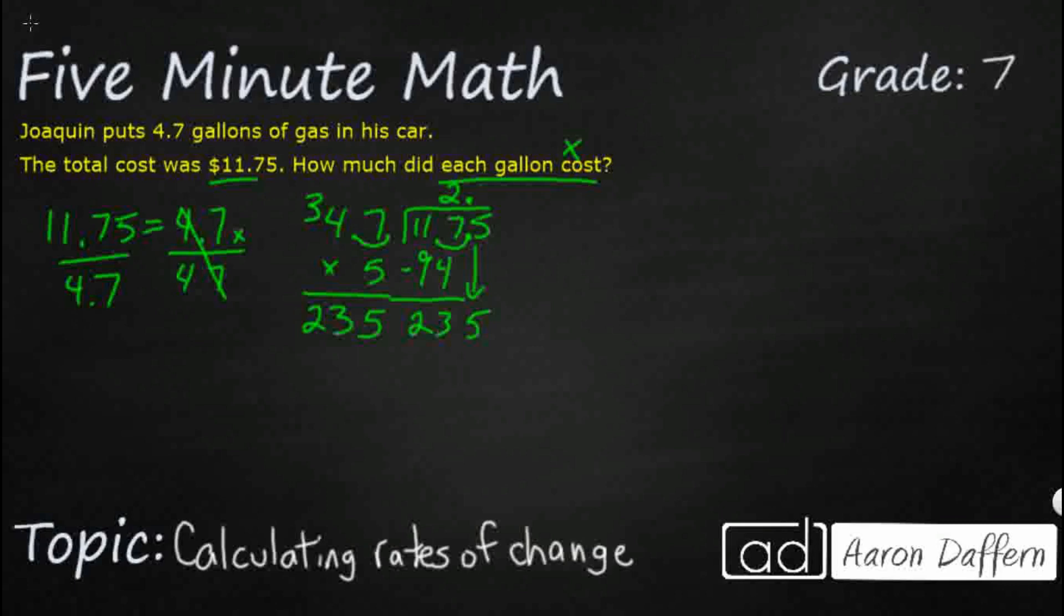So we're going to say it's 2.5. That's 235. There's nothing left over. If there were, we would keep going. But if we wanted to write this now in something that we would recognize, we would say this is $2.50.